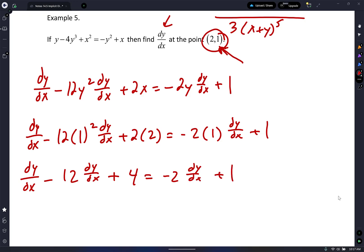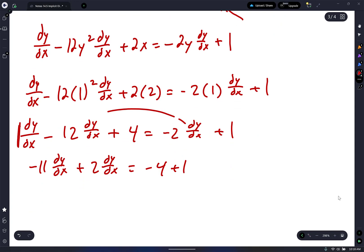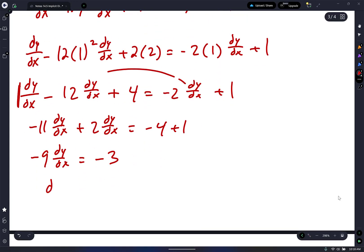Now it turns to algebra. dy/dx minus 12 dy/dx plus 4 equals negative 2 dy/dx plus 1. Move all the dy/dx's to the left, everything else to the right. Combined like terms. 1 minus 12 is negative 11. Negative 11 dy/dx, I'm moving that 2, so plus 2 dy/dx equals negative 4 plus 1. Negative 11 plus 2, what's that? Negative 9 dy/dx equals negative 3. And now to get dy/dx by itself, divide. Negative 3 divided by negative 9 is simply 1/3.